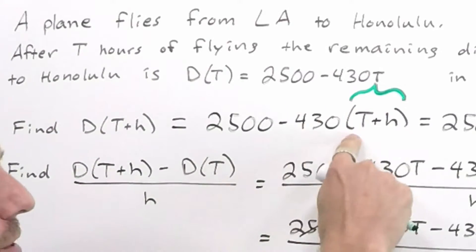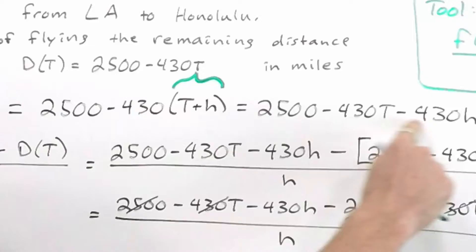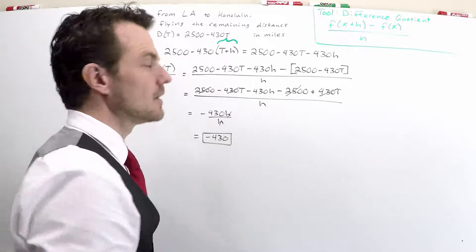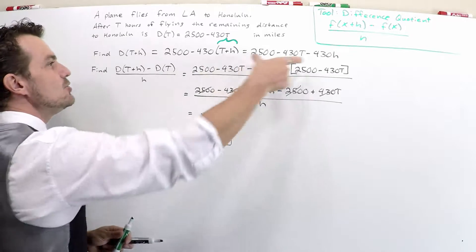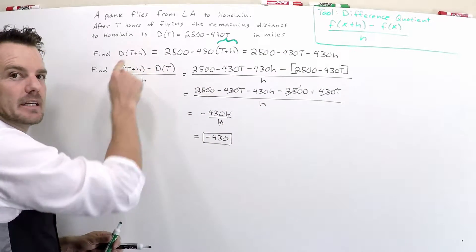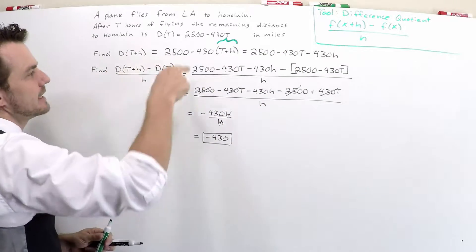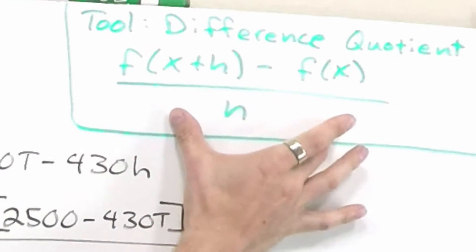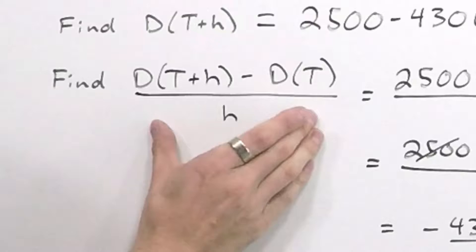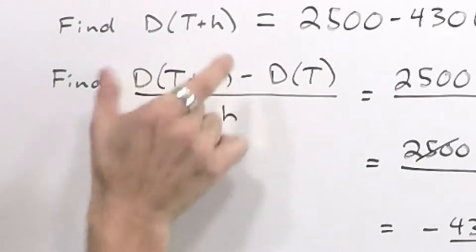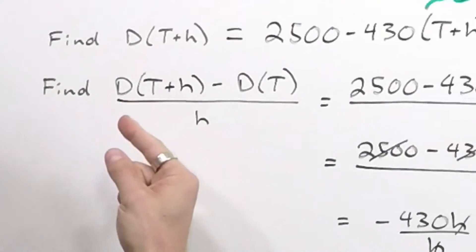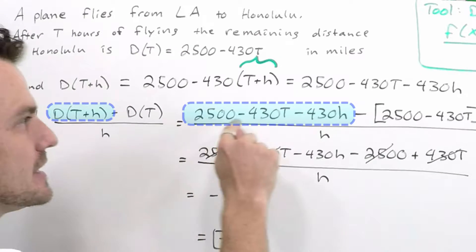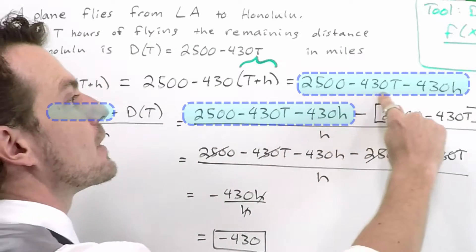Afterward, negative 430 gets distributed on each part, which leaves us with this. Then we took that result and used it in the difference quotient. This thing right here is called the difference quotient — it's typically written in this format, but here they asked for it this way. The first step gave us the top left part of our fraction, which is exactly what we got from the part above.